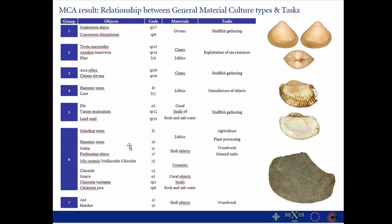I also did statistical analysis to see patterns of material culture and how these different material cultures relate to all the archaeological sites. After the analysis, I was able to identify very specific groups of material culture in very specific sites. For example, as shown in this slide, there were some kind of scrapers or flints together with very specific bivalves that could indicate the presence of a very specialized activity.